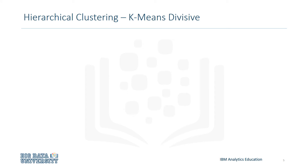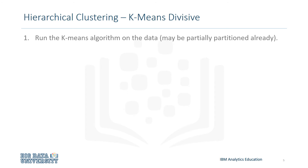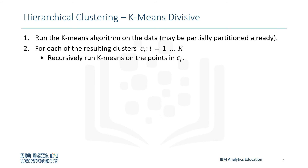The second divisive clustering algorithm we'll look at is k-means divisive clustering. The first step is to run the k-means algorithm on the original dataset. This dataset may already be partially partitioned or may just be one large cluster. We choose a value of k, which is how many subsets we want to break the cluster into. So k=3, for example, would mean we want to break the cluster into three smaller clusters. We run this recursively until we're unable to break the clusters down further.